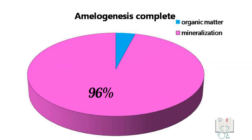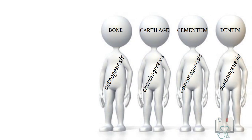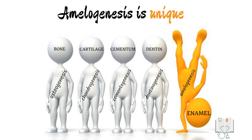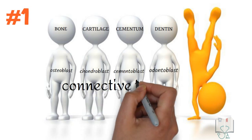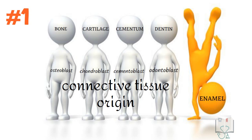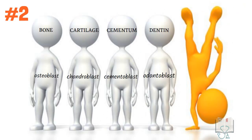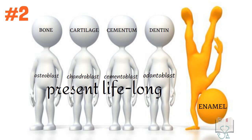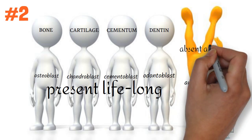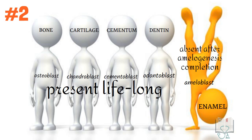As mineralization proceeds, the percentage of minerals in enamel increases and reaches 96 percent, leaving only 4 percent organic matter. Amelogenesis is unique among all calcified tissues. All mineralized tissues in the body are formed by cells of connective tissue origin, but only enamel is formed by cells of epithelial origin. Additionally, the forming cells of all other mineralized tissues are present to continuously create tissue lifelong, but in amelogenesis, after complete enamel formation, the ameloblasts are destroyed so that no repair or renewal of enamel can occur later in life.